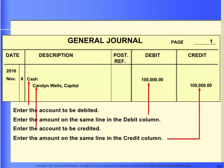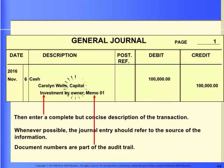Then place the dollar amount in the debit column. Next, drop down a line and indent one quarter to one half inch and write the name of the account credited. Place the dollar amount of the credit in the credit column. Once the transaction has been journalized, we need to indent a little and add an explanation of the event. The audit trail is a chain of references that makes it possible to trace information, locate errors, and prevent fraud. This is an important part of each journal entry.